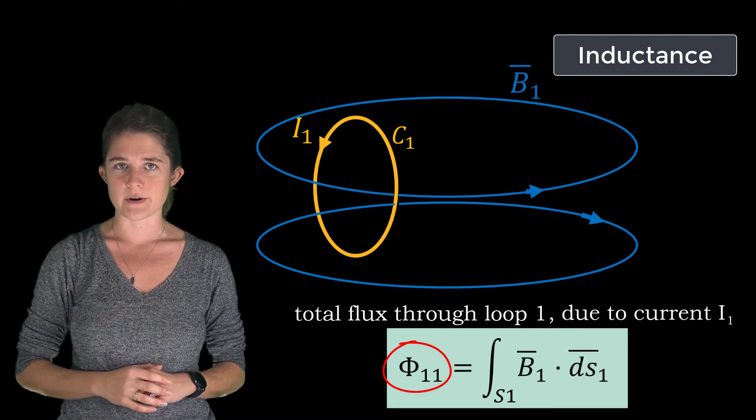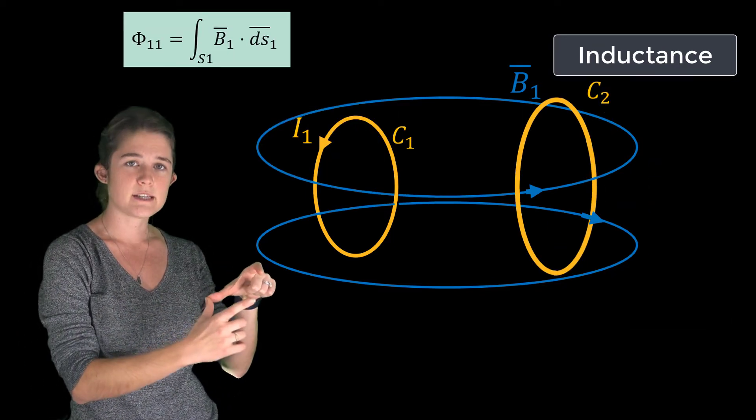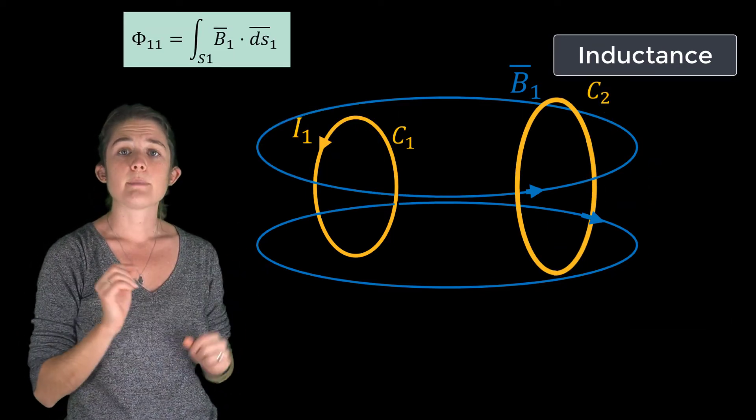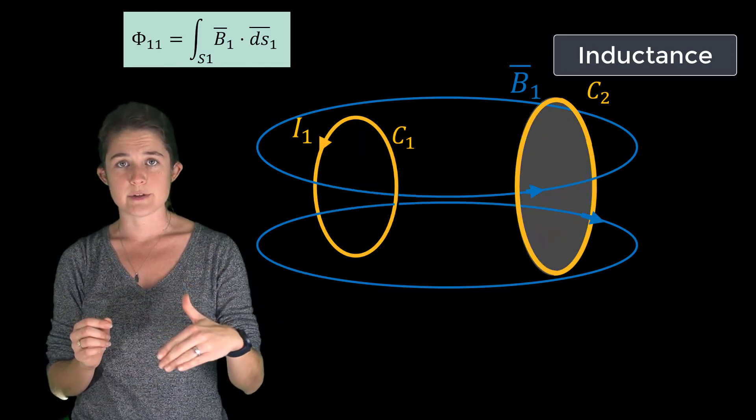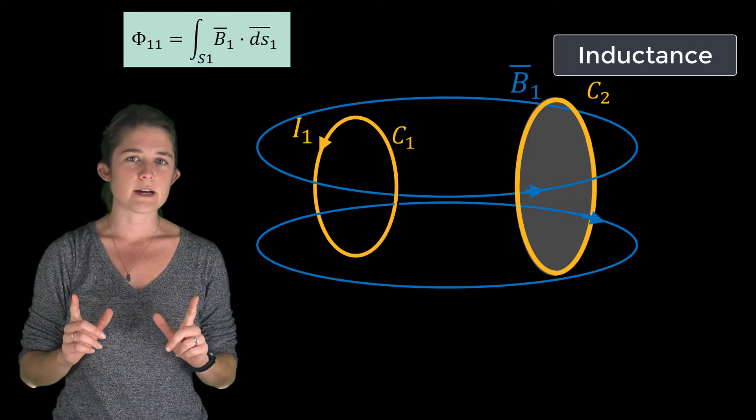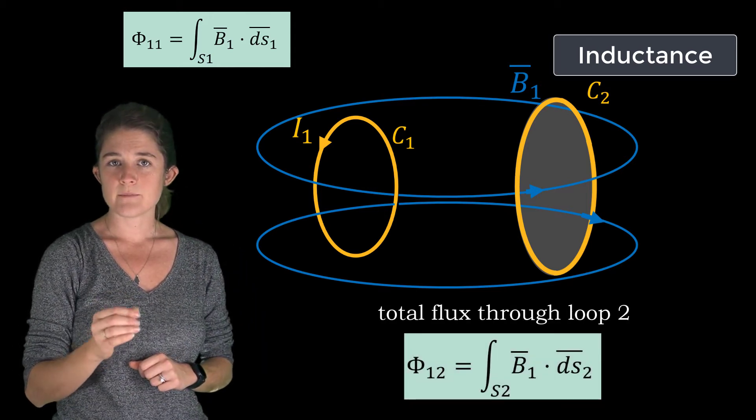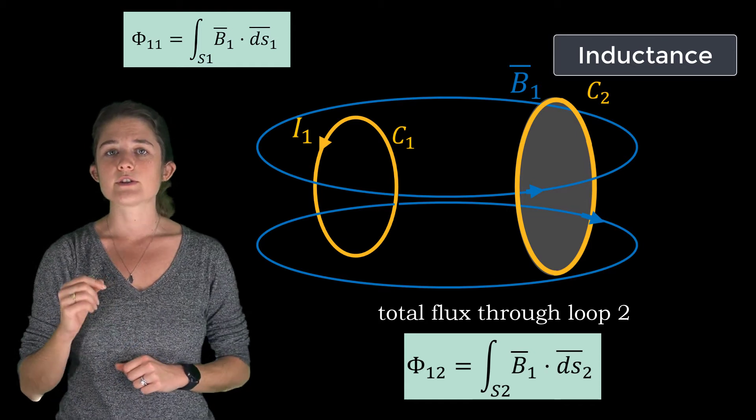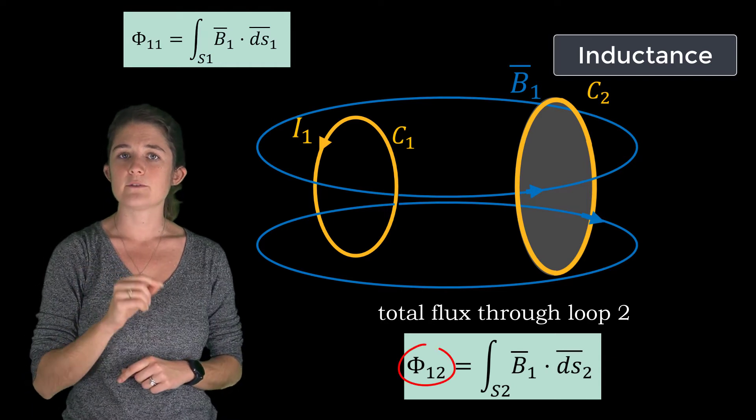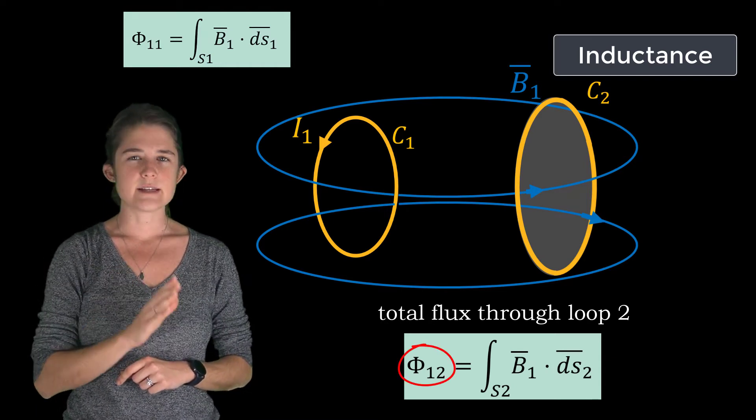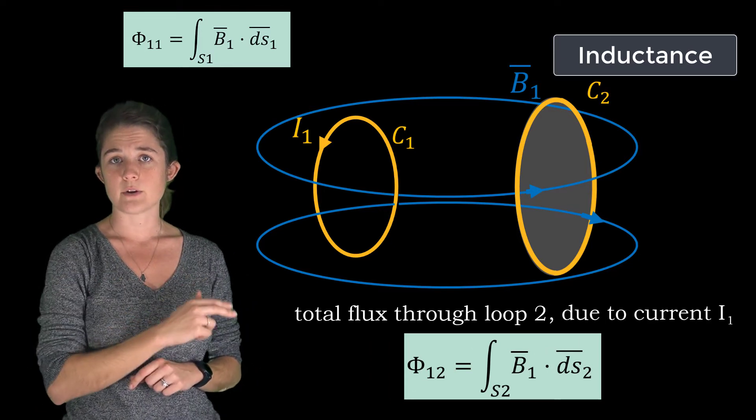Now let's suppose we bring a second loop C2 into the proximity of the first loop, so that part of the flux density field surrounding loop 1 is also pushed through loop 2. The total flux passing through the second loop is the integral of B1 (the flux caused by I1) over the surface surrounded by the second loop, and we will call it Φ12, meaning that this is the flux passing through the second loop which is caused by the current flowing around the first loop.